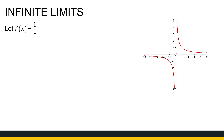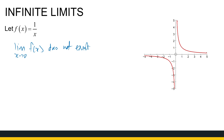We've defined a limit to exist if the limit from the left and the limit from the right are equal. So if we look at this function, we know the limit as x approaches zero does not exist, because the limit from the negative side is not equal to the limit from the positive side.